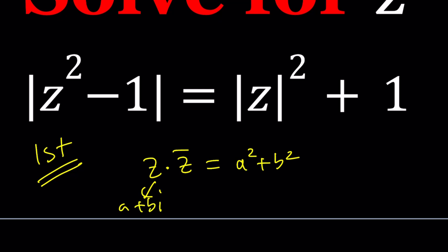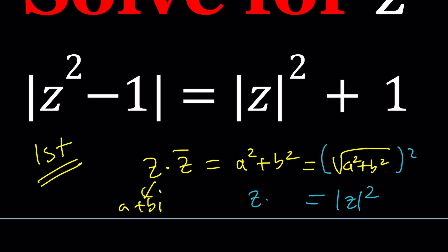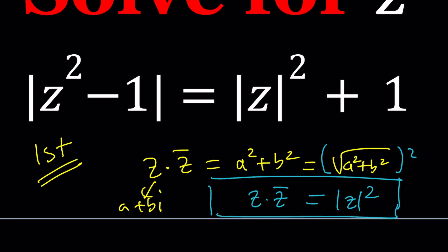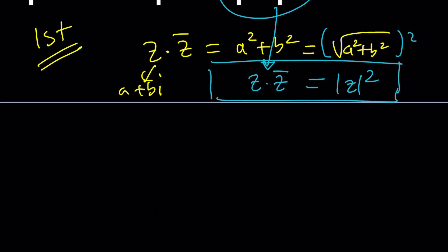This is the same thing as the square root of a squared plus b squared, all squared, which is the absolute value of z squared. So we get this nice identity: if you multiply z and z-bar, you get the absolute value of z squared, which means we can replace |z|² with z·z̄ in our equation.